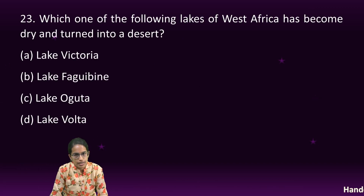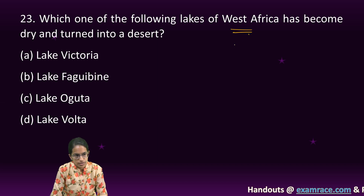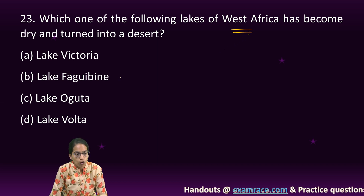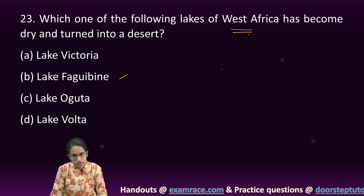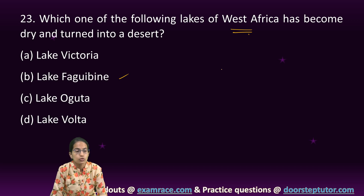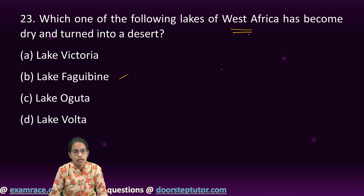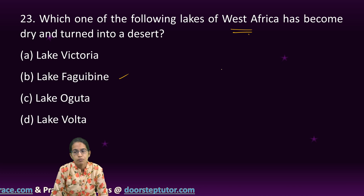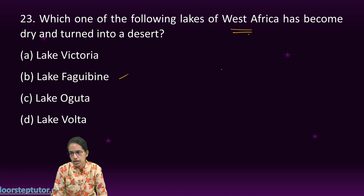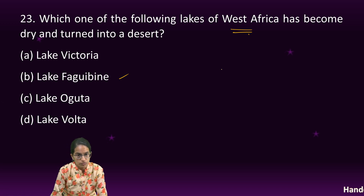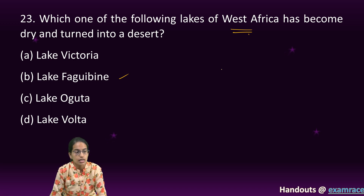The next question asks which of the following lakes of West Africa have turned into a desert. In Mali, it is the Faguibine lake which has recently turned into a desert — it started drying back in 2007, and since then the rate of drying has been significantly high. This is one of the important countries where this phenomenon has been witnessed.